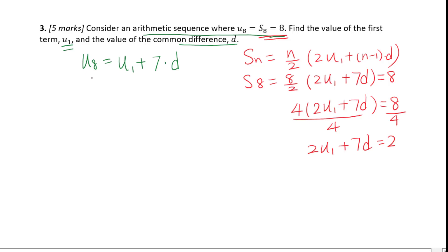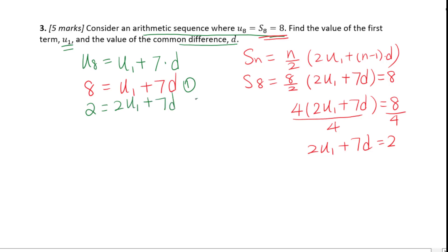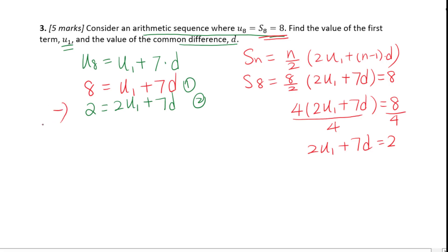For the first equation, U8 equals 8 means U1 plus 7d equals 8. The second equation is 2U1 plus 7d equals 2. We do subtraction: the result is 6 equals negative U1, so U1 equals negative 6.